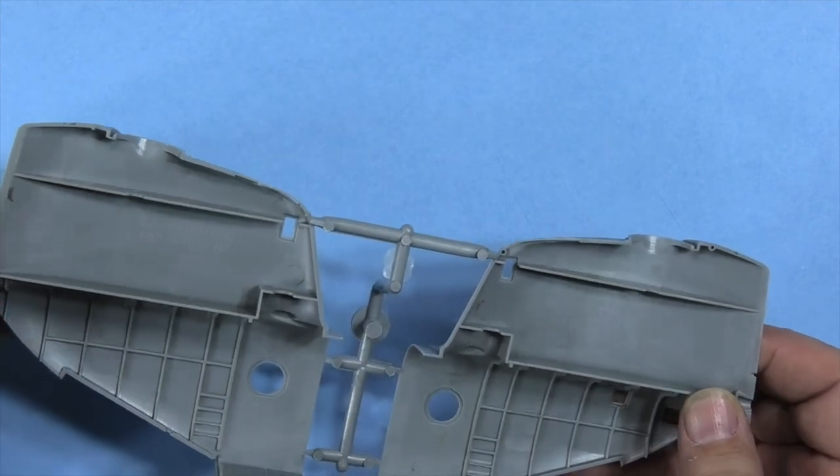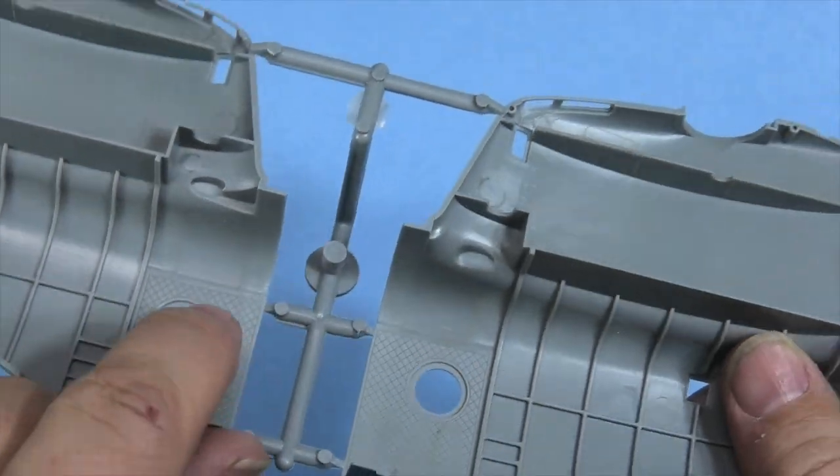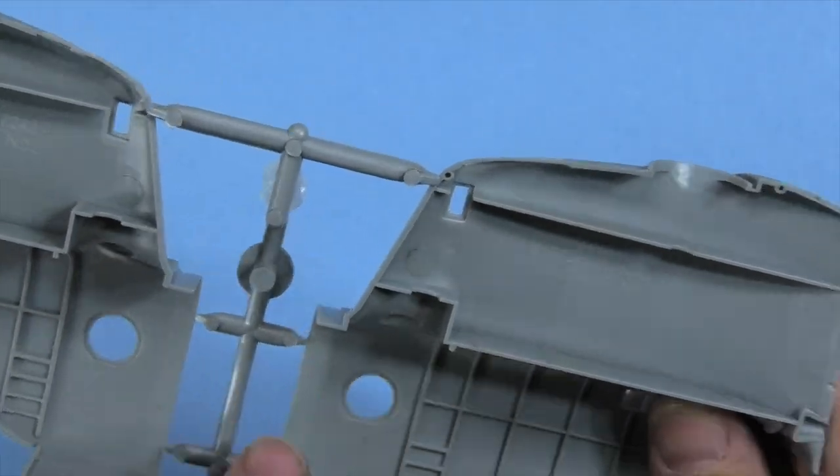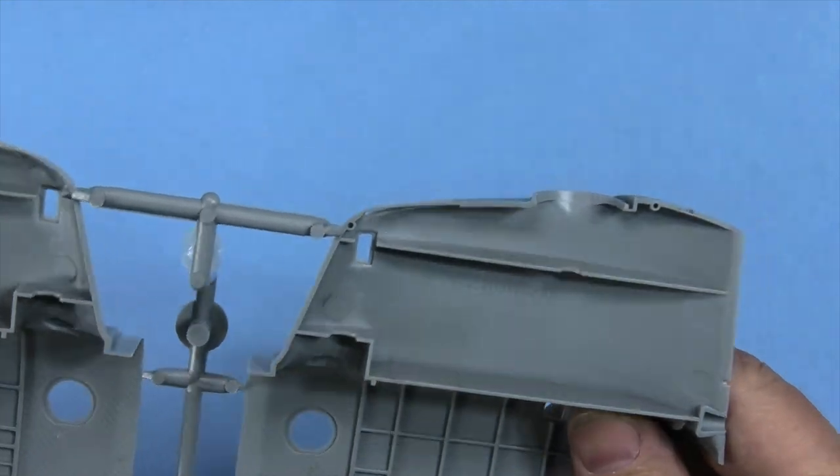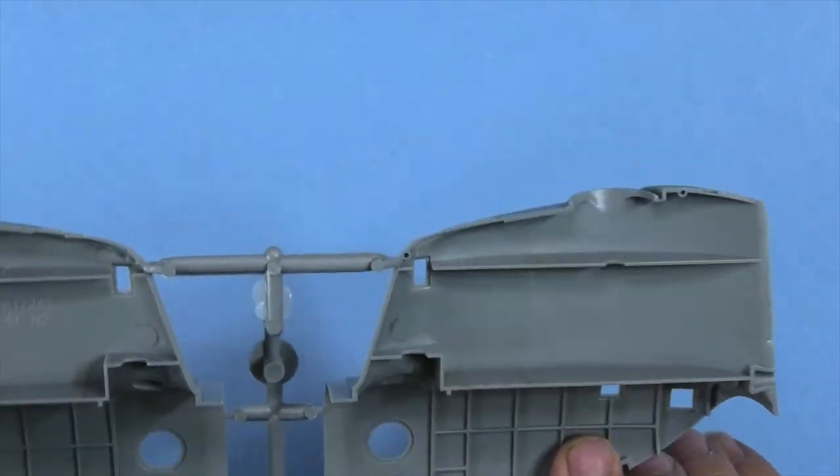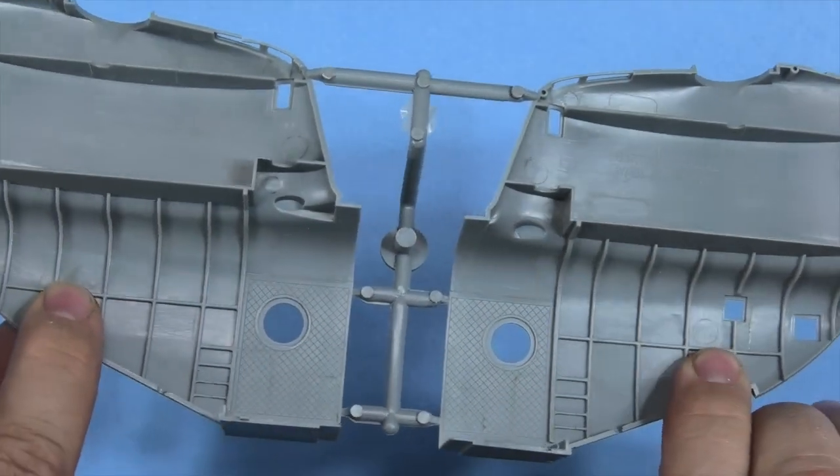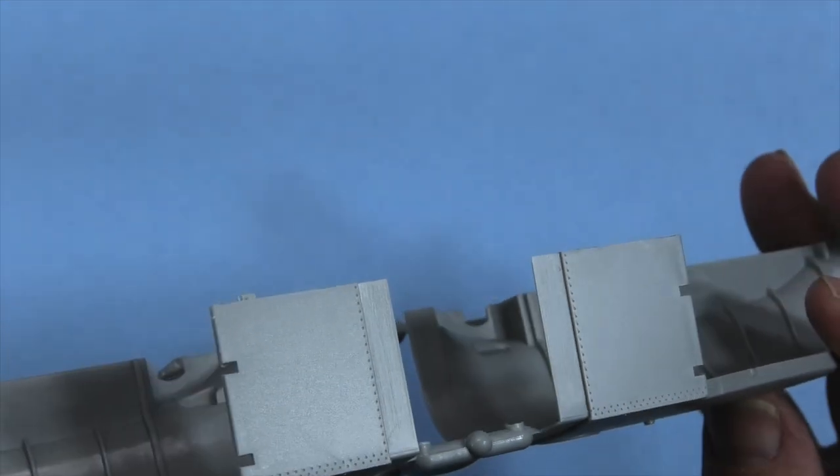But again, great detail in here. There's a couple of ejector pin marks right there. That's all I really see, it will impress me. Look on the bottom here, rivet detail, and then of course the amazing rivet detail in both the tail sections.